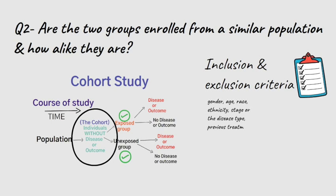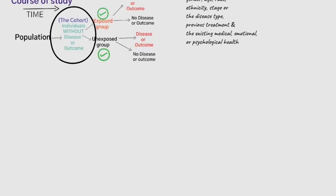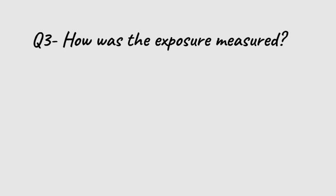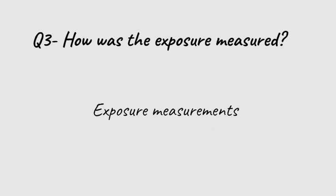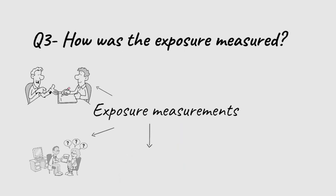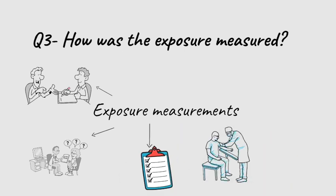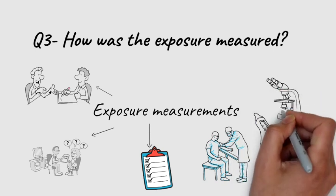Elements like gender, age, race, ethnicity, stage of disease, disease type, previous treatment, and existing medical, emotional, or psychological health conditions are all considered as selection criteria, and it varies from one individual study to the next. The cohort should be as similar in these aspects as possible. How the exposure is measured or calculated should be clearly defined — exposure measurements like interviews, questionnaires, behavior records, biological measurements, and other records should be similar when assigning people to an exposed or unexposed group.